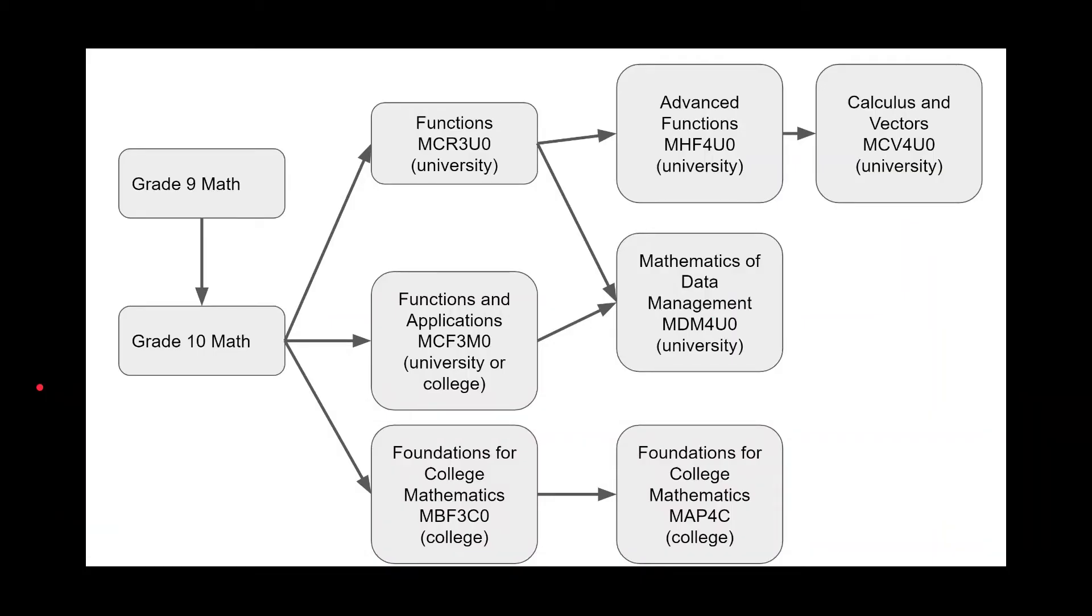Now that you've figured out which programs and which courses you need to get into your college or university program is when this chart comes into play. This shows you what the prerequisites are for grade 12 classes so that you can make sure you can get into them. Let's say, for example, you need grade 12 advanced functions in order to get into your university program. If we take a step back, the only grade 11 course that gets you there is functions MCR3UO. That means that if you want to be taking advanced functions in grade 12, you need to be taking functions in grade 11.